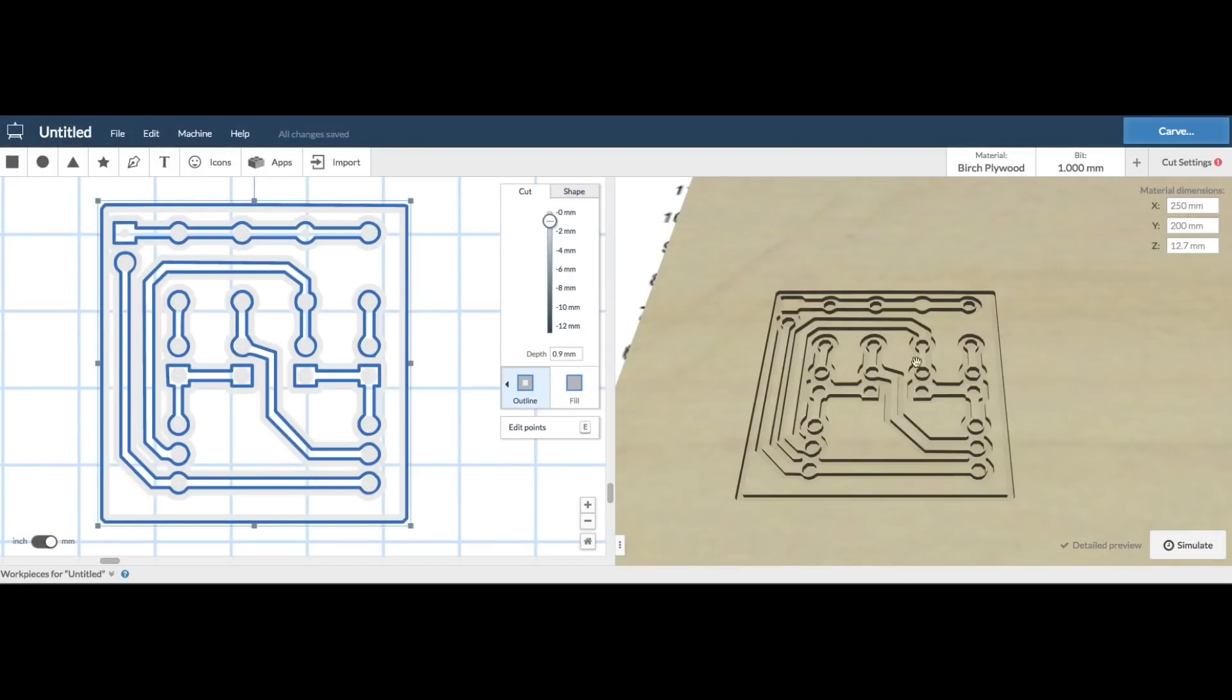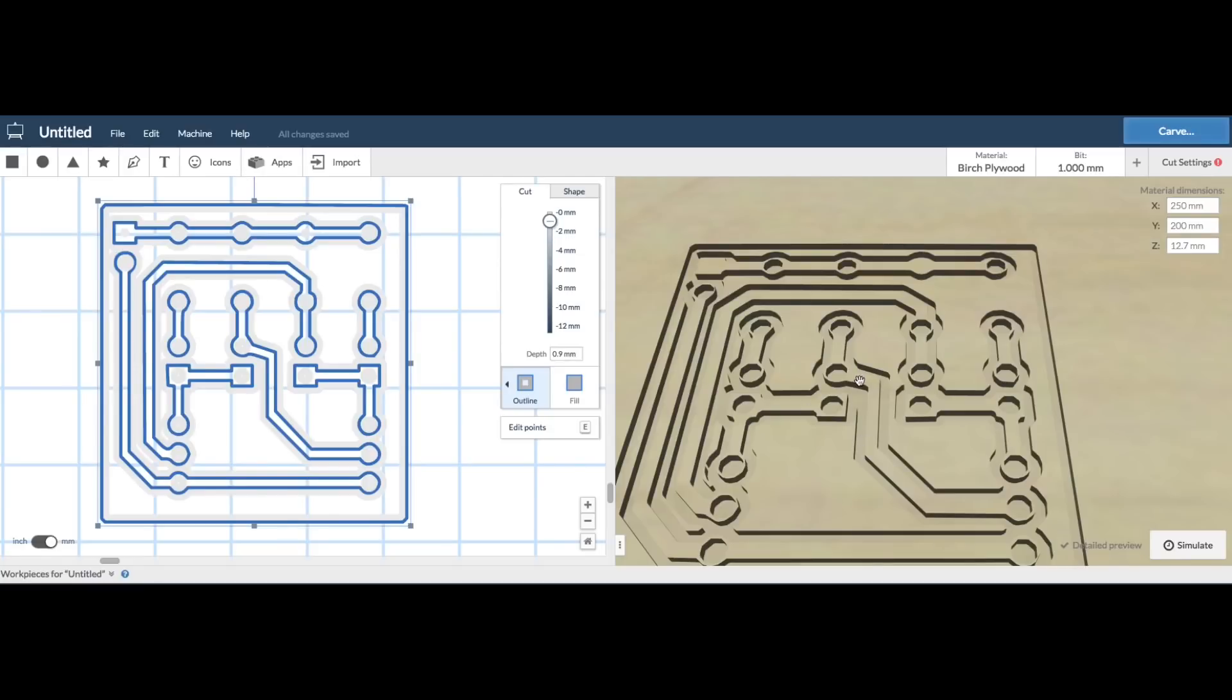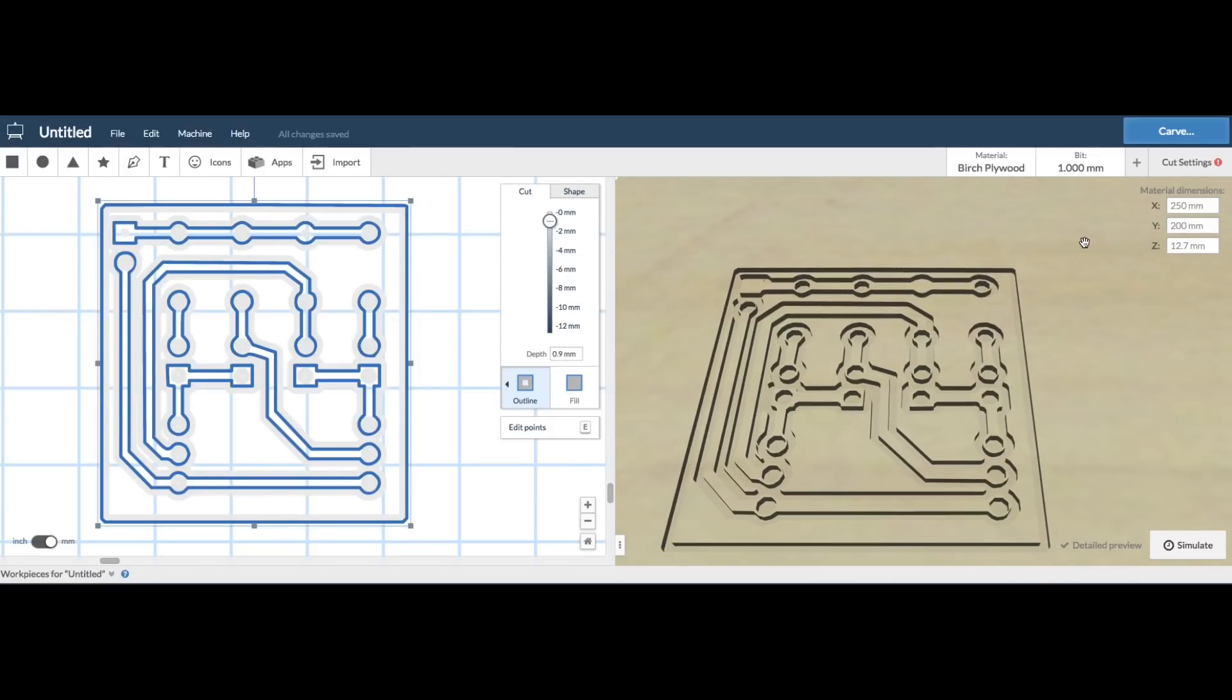So once I had that set I generated a preview and you can see it's cutting out the copper islands. That's exactly what I wanted.